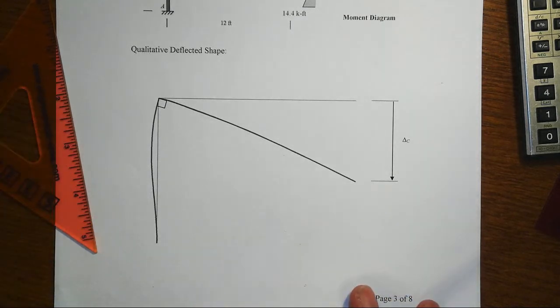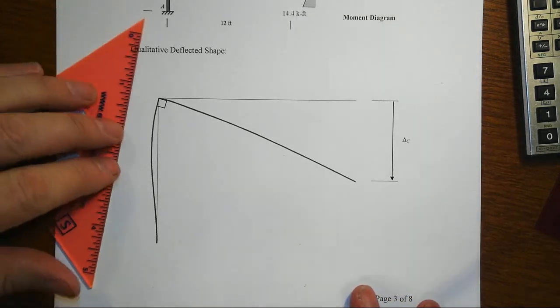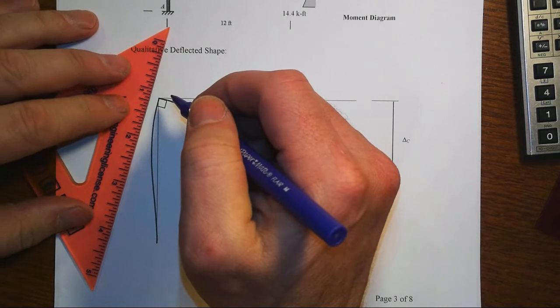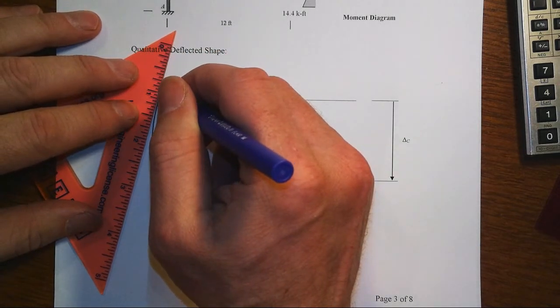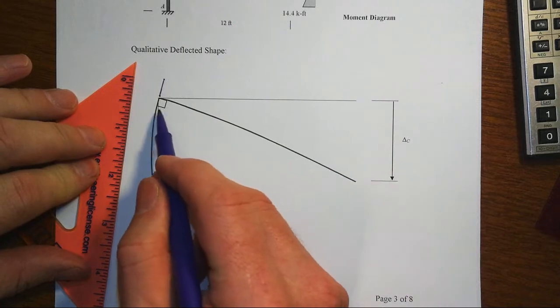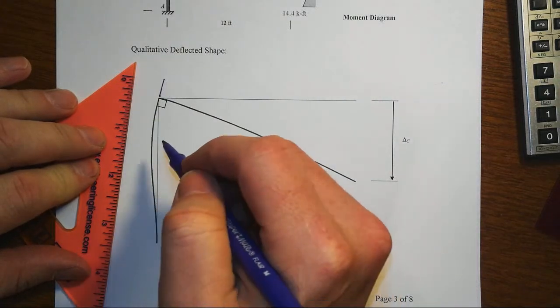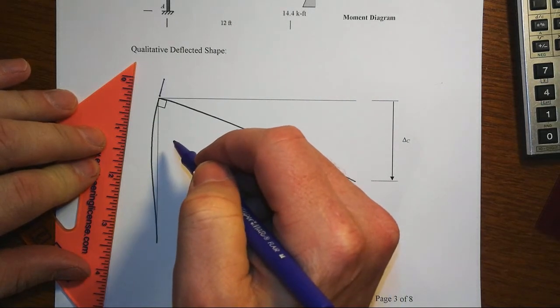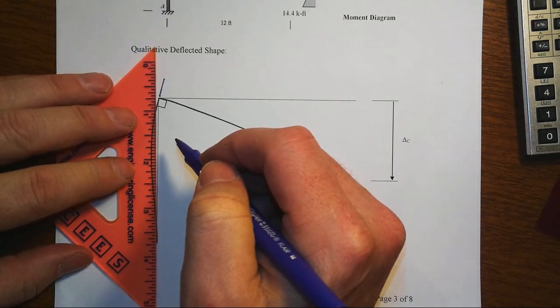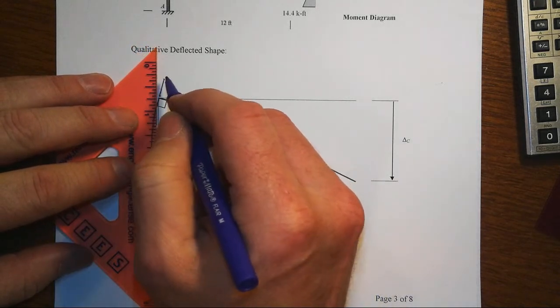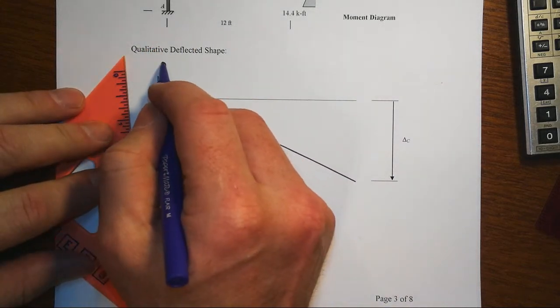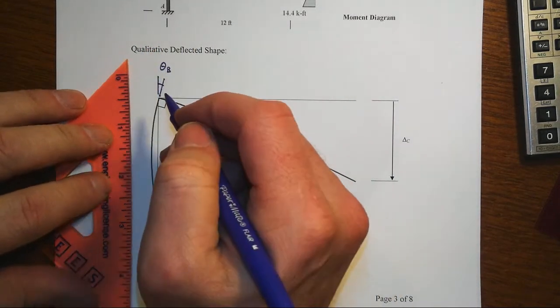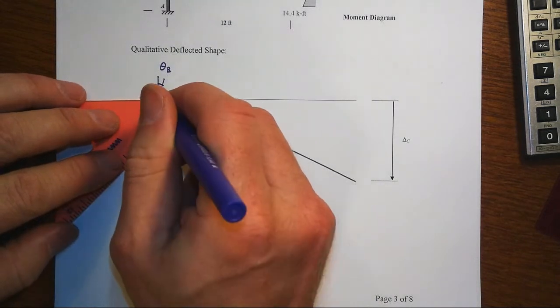And so from there we can easily apply the moment area method, which is the method that we're asked to do, noting that this joint of the beam-column intersection here is a rigid joint. It starts off at 90 degrees and rotates, and it's still at 90 degrees for the two members. So a key thing here is recognizing that that joint rotates the same on all sides.